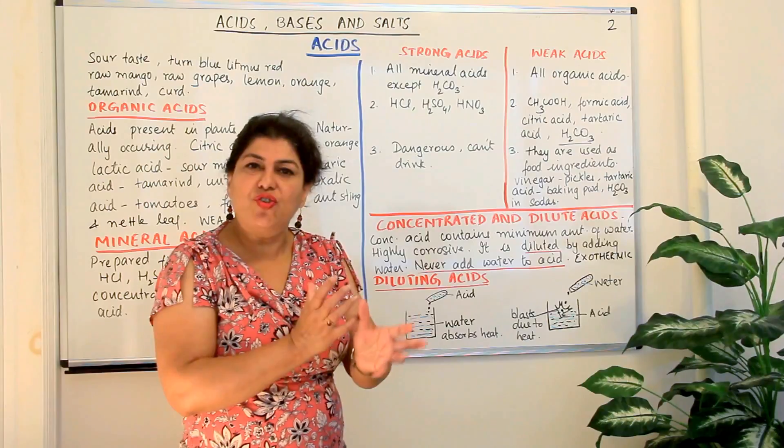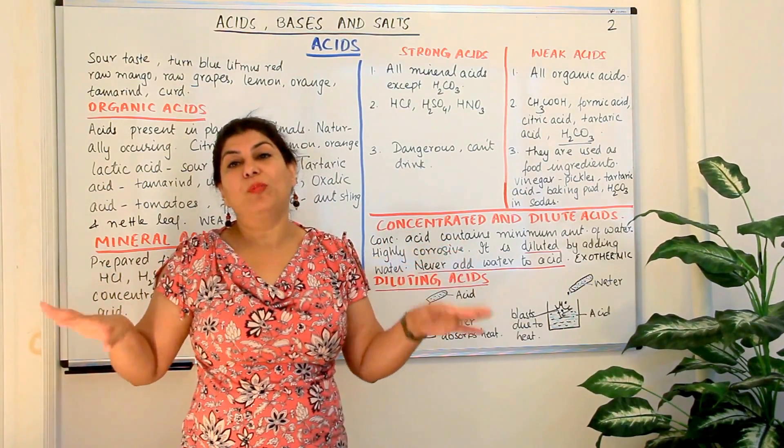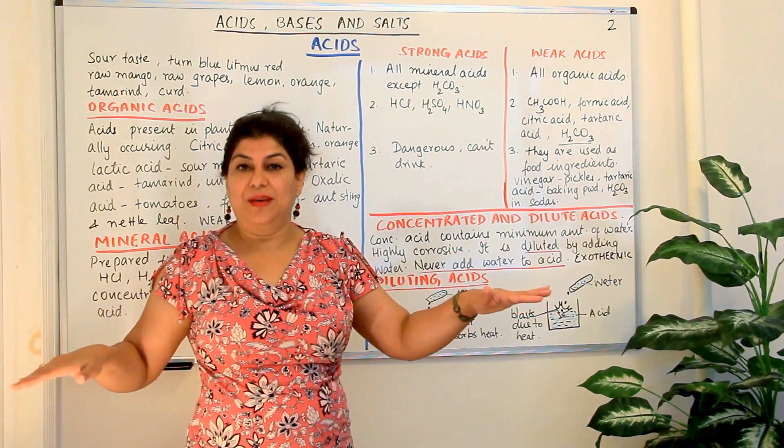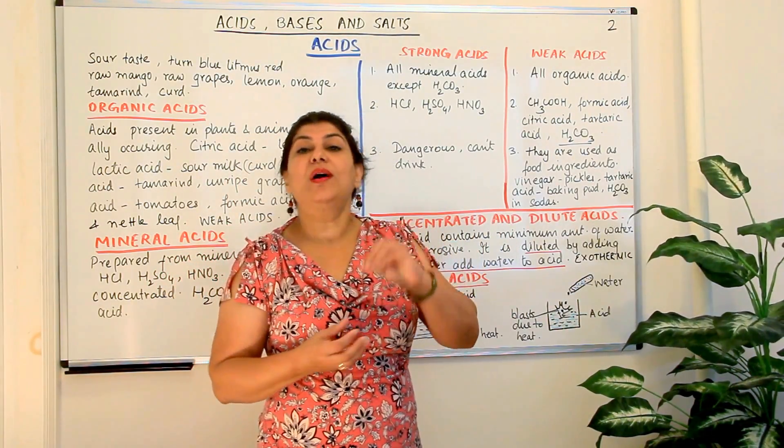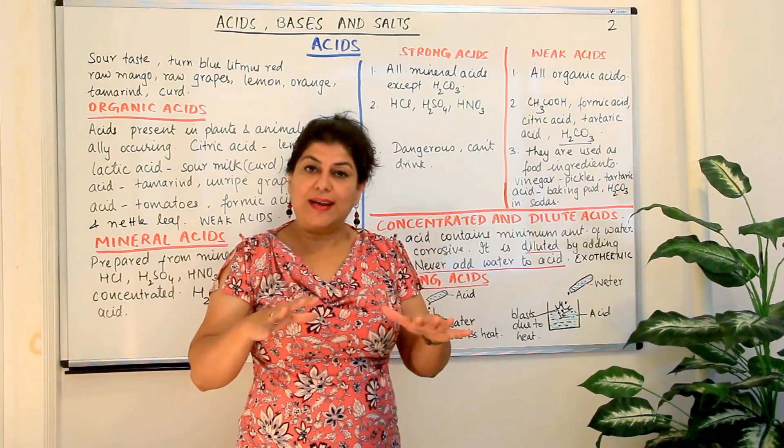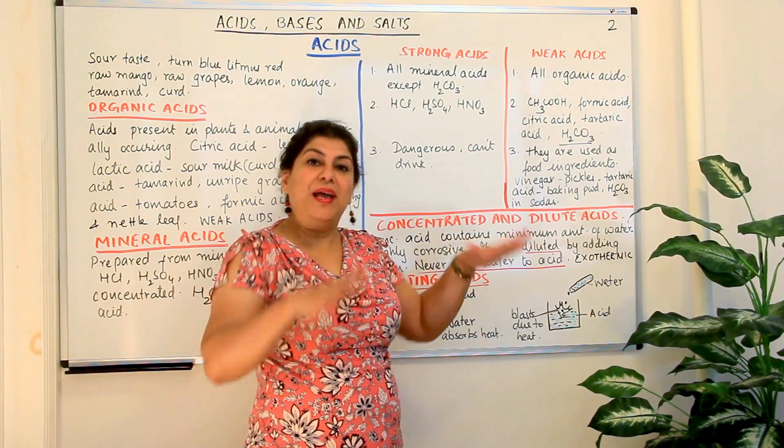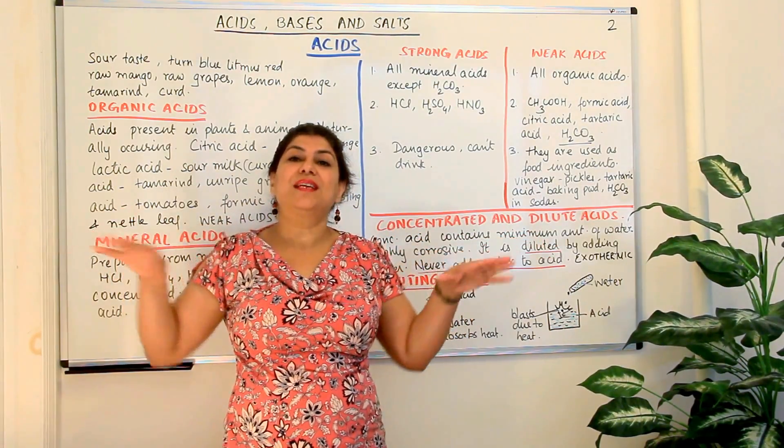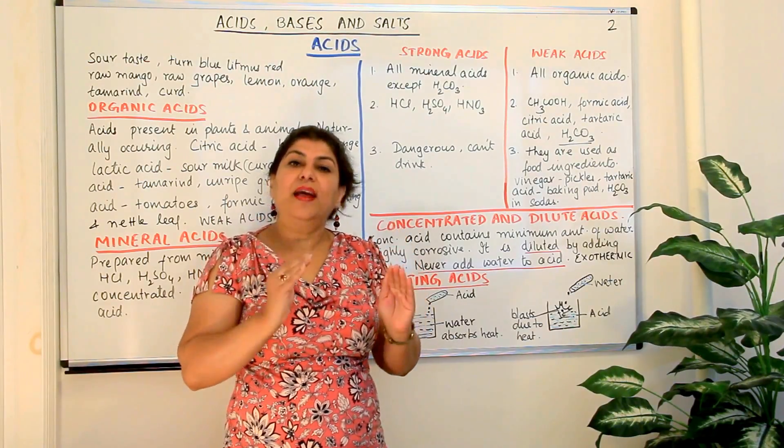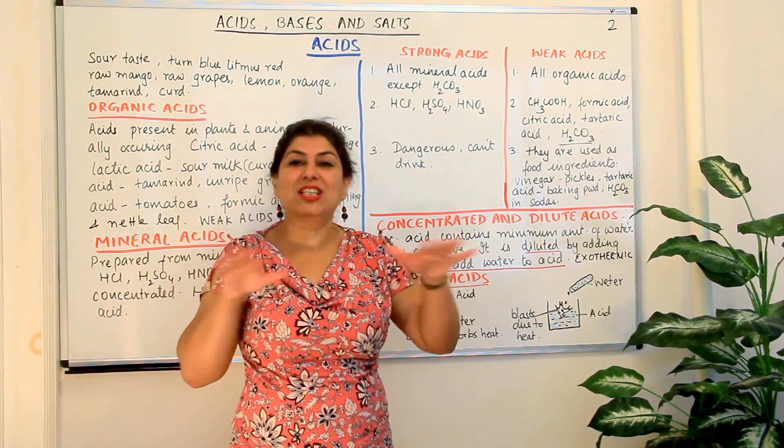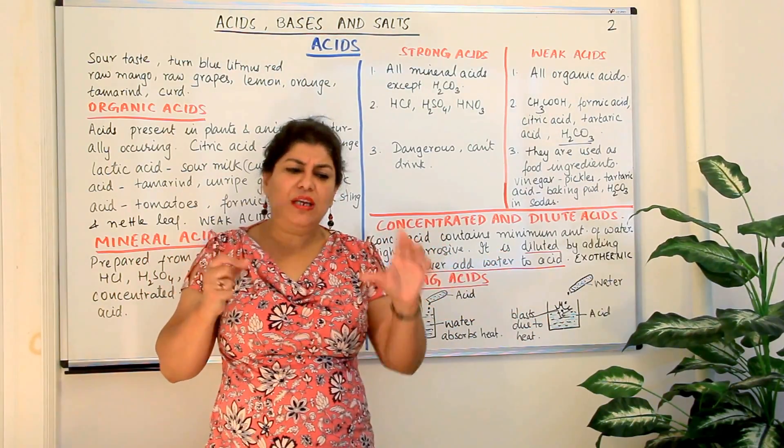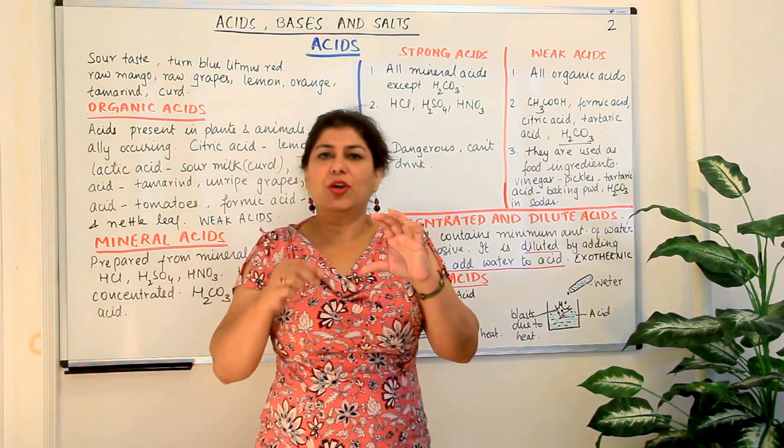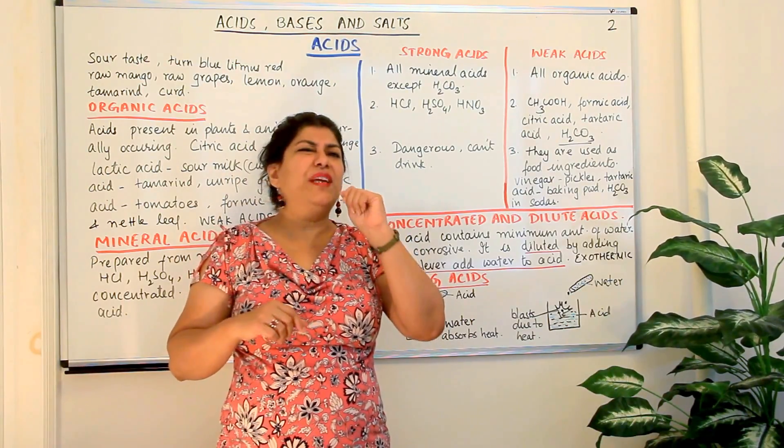So these concentrated acids, they are very, very strong and in order to make them usable for our normal purposes, we dilute them. And dilution of an acid means adding water to a concentrated acid so that the content of water goes up and the amount of acid present in that solution decreases. And now, it has a mitigating effect. It is not so dangerous anymore because you have diluted it.